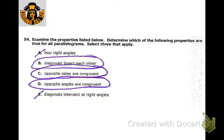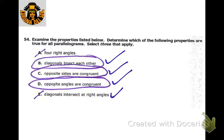Parallelograms don't always have four right angles — that's only if it's a rectangle or square. The diagonals bisect each other, opposite sides are congruent, and opposite angles are congruent. The diagonals don't have to intersect at right angles — if they do, it's a rhombus or square.